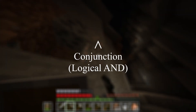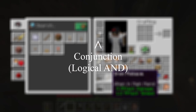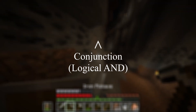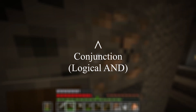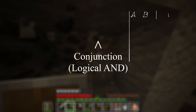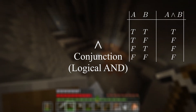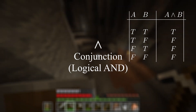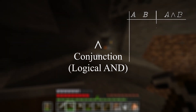The logical conjunction is basically like AND in English. Two statements combined with the conjunction form a new statement that is true if and only if both statements are also true. If at least one of them is false, then the larger statement is false.